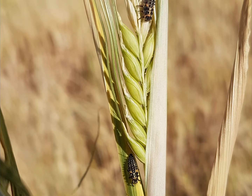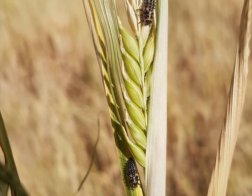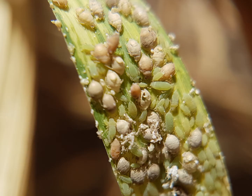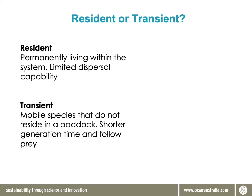In the case of specialists, because they only attack one species or a small number of species, when their food source runs out they need to move out of a crop in search of more food, or that population will die out. The other distinction we can make is between residents and transients.